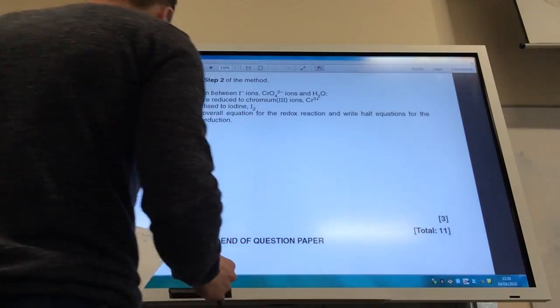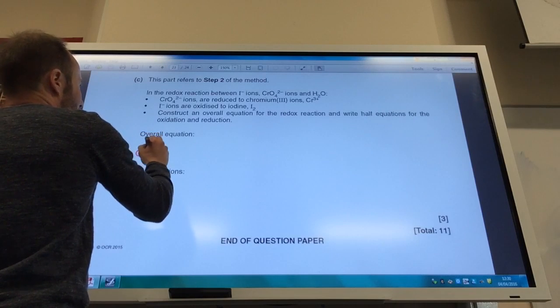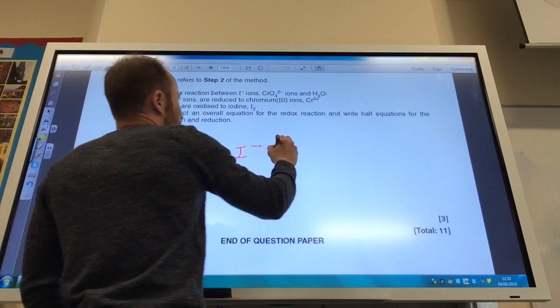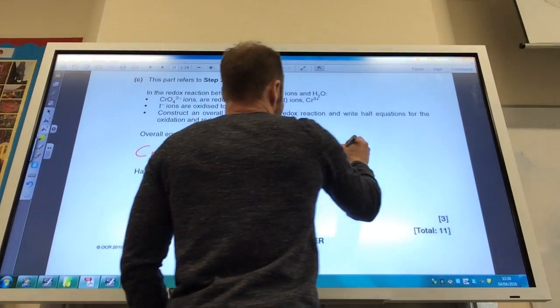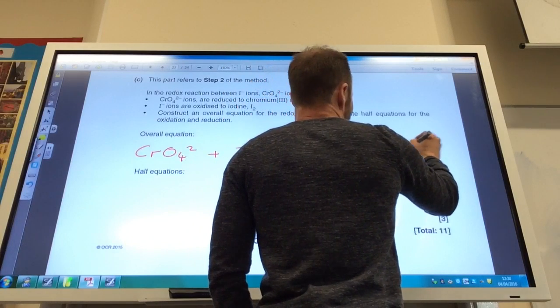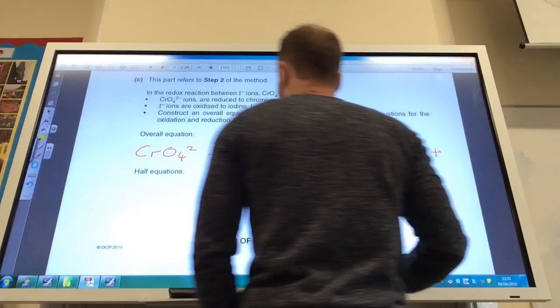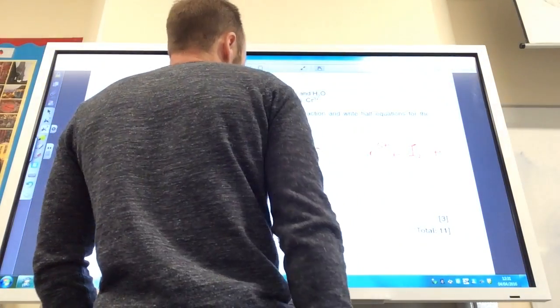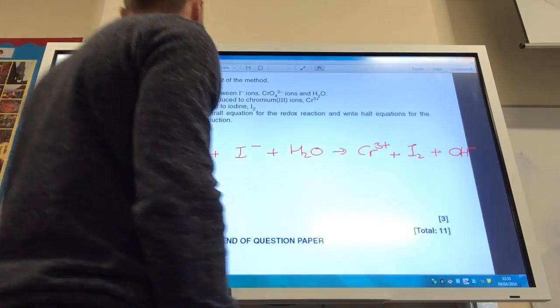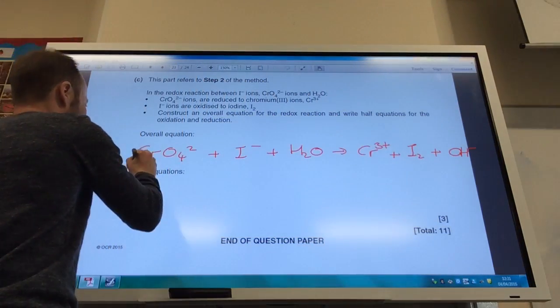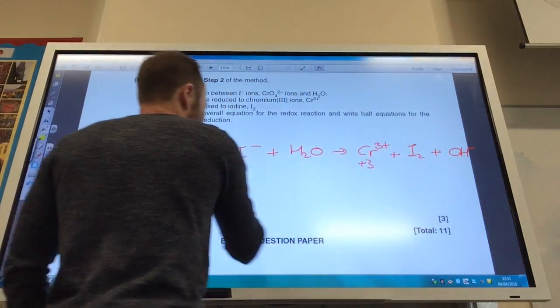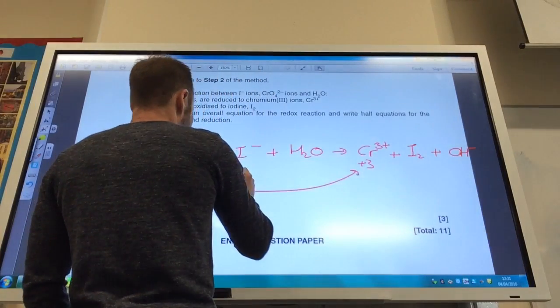Okay so let's have a look at this one we're going to construct an overall equation I've got CrO4 2- reacting with I- and water to give me Cr3+ plus I2. And if I look over this side I've got oxygens and I've got hydrogens going on so I'm going to need to make hydroxide ions that side I now need to get this to balance the oxidation number of chromium there is +6 and there is +3 so I've had a change there of -3.